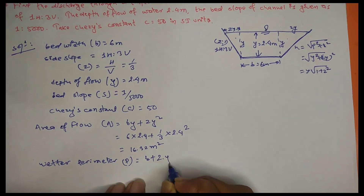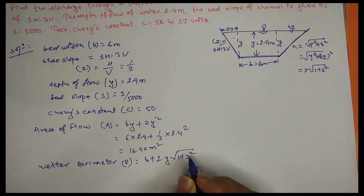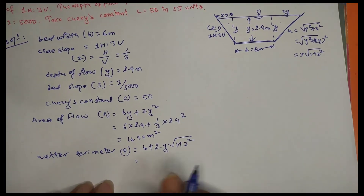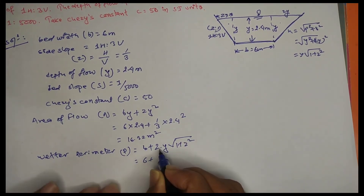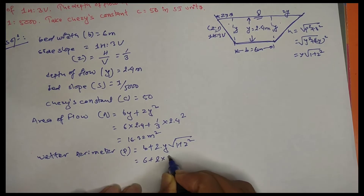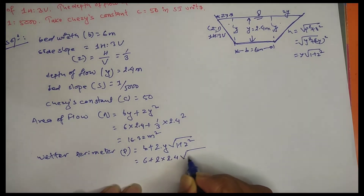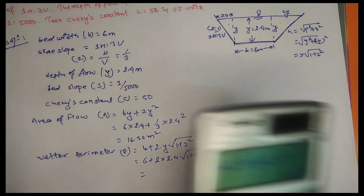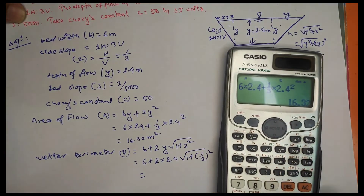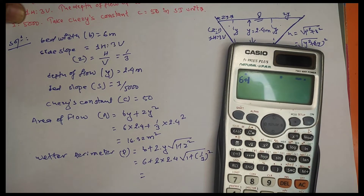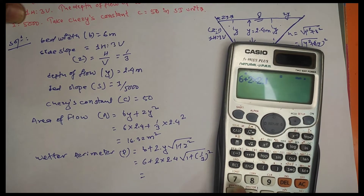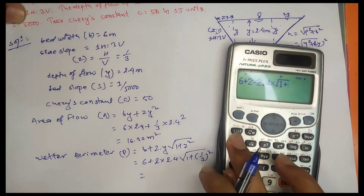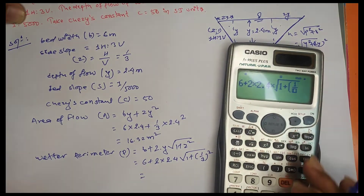The wetted perimeter P equals 2y × root(1 + Z²). Substituting values: b = 6, y = 2.4, Z = 1/3. So P = 6 plus 2 × 2.4 × root(1 + (1/3)²).